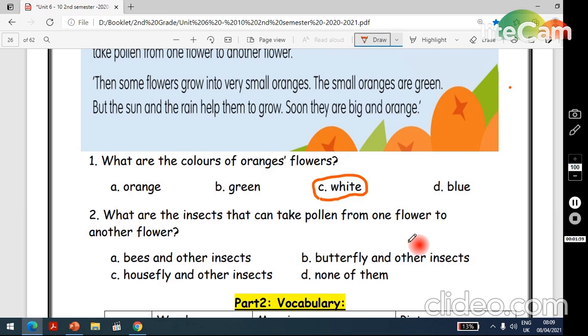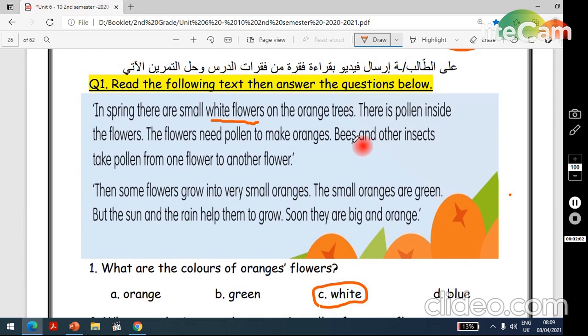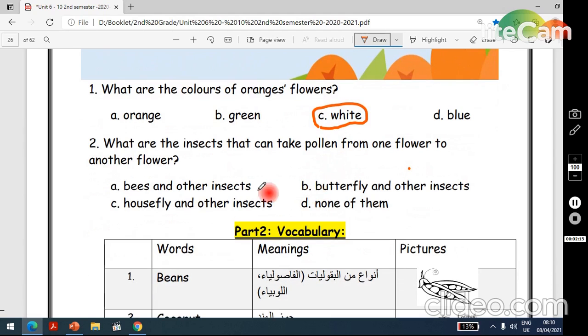Okay, now the answer is yes, bees and other insects take pollen from one flower to another flower. So the answer is A, bees and other insects.